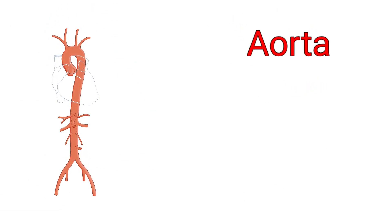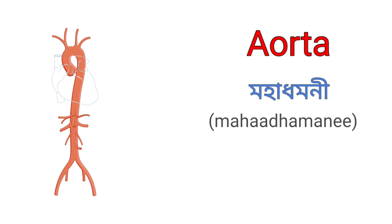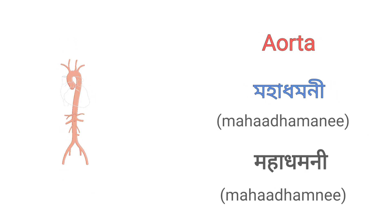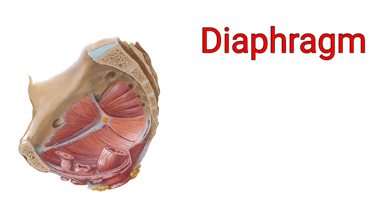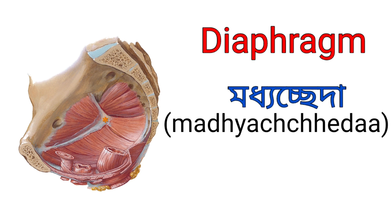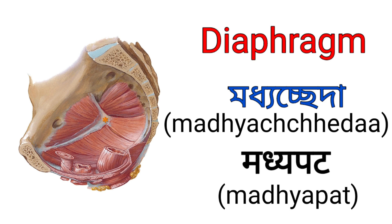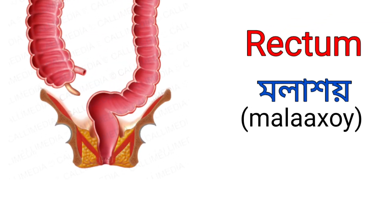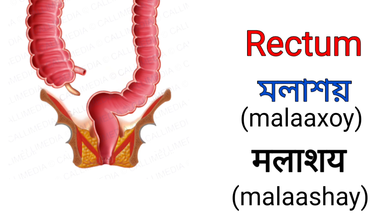Aorta. It's called Mahadhamuni in Assamese and it's called Mahadhamni in Hindi. Diaphragm. It's called Maidho Cheda in Assamese and it's called Mahadhamni in Hindi. Rectum. It's called Molahoi in Assamese and it's called Malasai in Hindi.